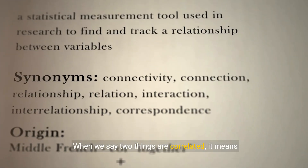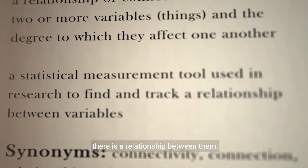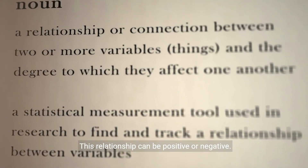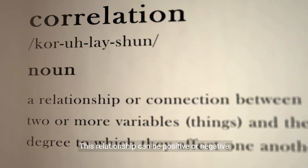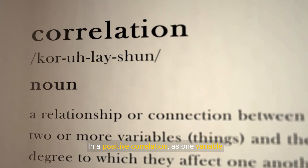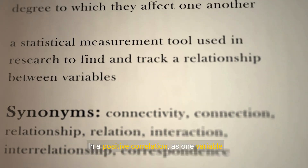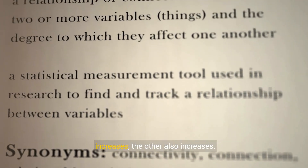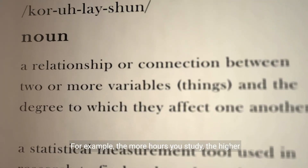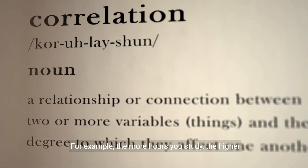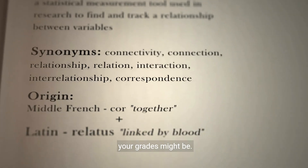When we say two things are correlated, it means there is a relationship between them. This relationship can be positive or negative. In a positive correlation, as one variable increases, the other also increases. For example, the more hours you study, the higher your grades might be.